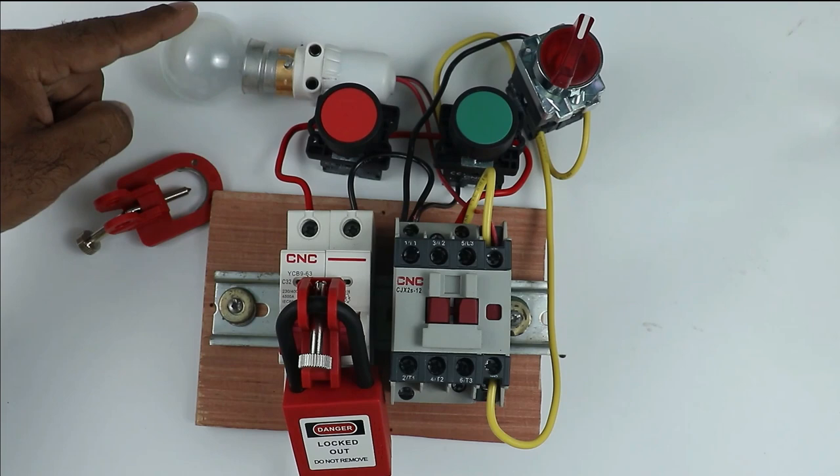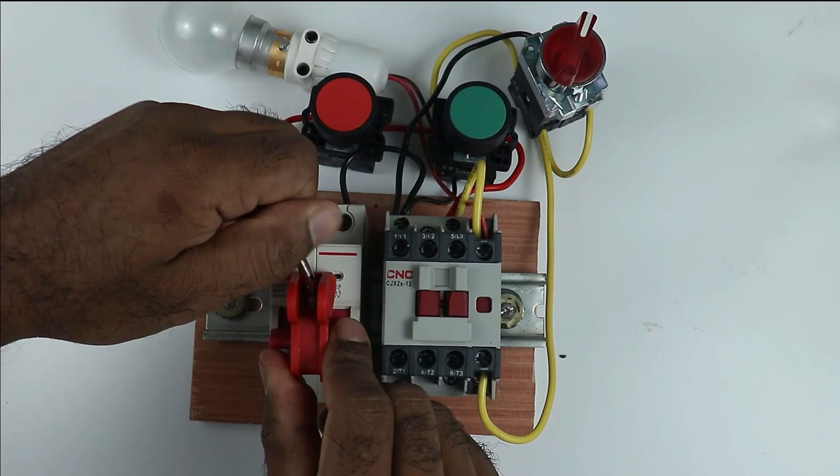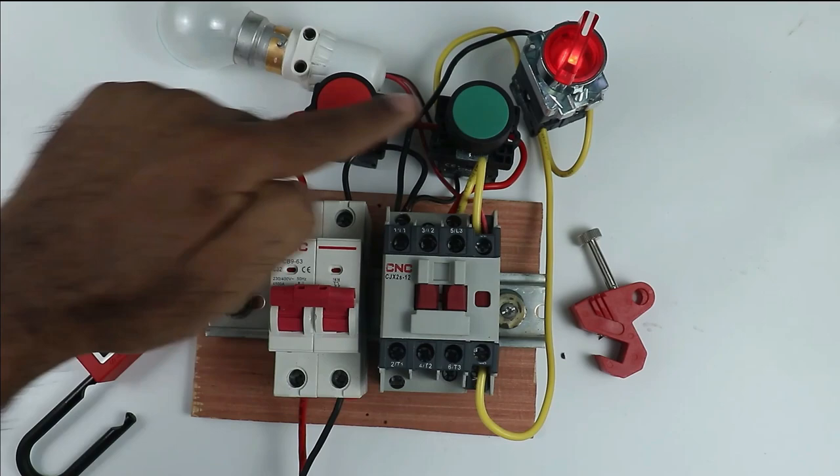When lock is opened, you can turn on this. So let's first remove this. After removing, you can turn on the MCB and can turn on the motor.